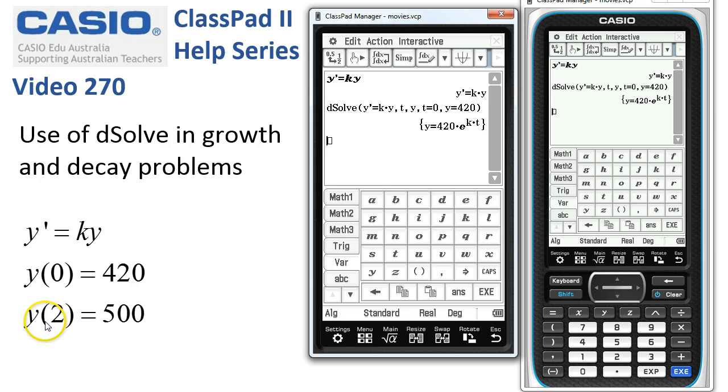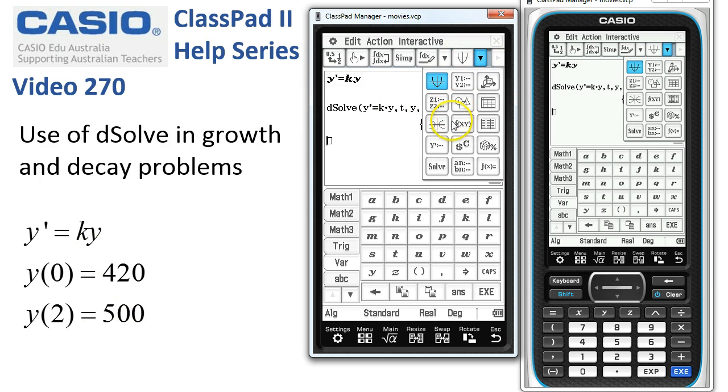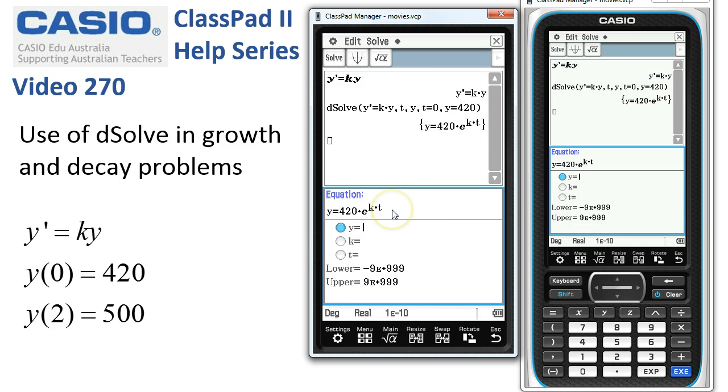Given that after two weeks, or whatever the time, when time is two we've got a population of 500, we're going to go split screen with numsolve. So here it is and here's the equation that's already there.